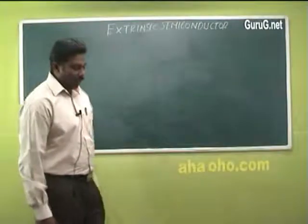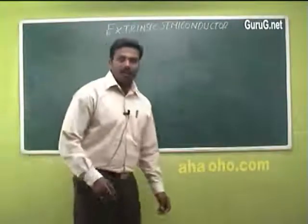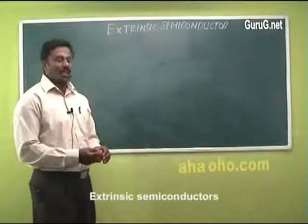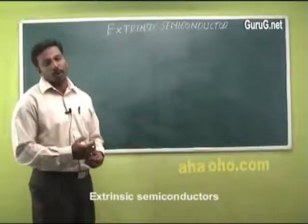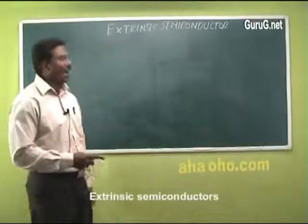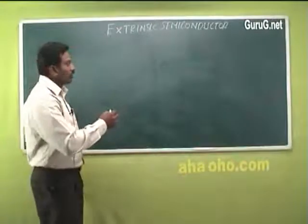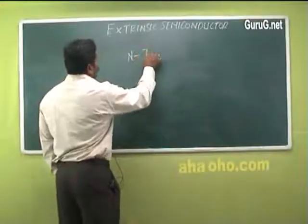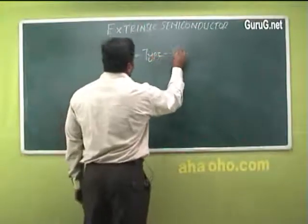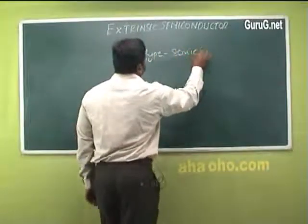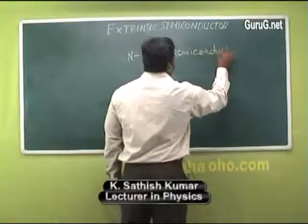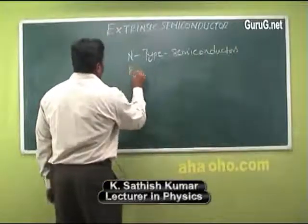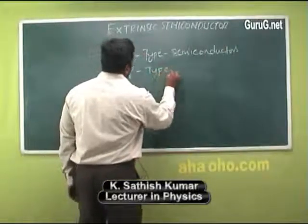Extrinsic semiconductors are the impure form of semiconductors. Here, the conductivity mainly depends upon the impurity atoms. Based on the impurity added, extrinsic semiconductors are classified into two different types: n-type semiconductors and p-type semiconductors.